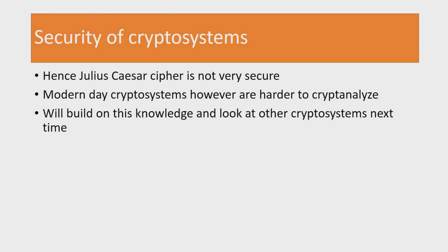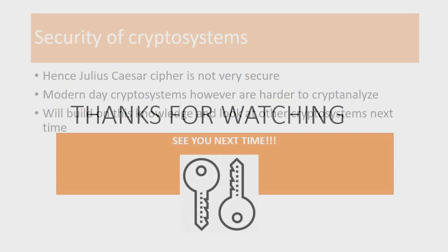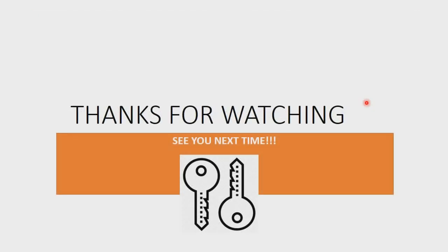In the modern day, we have different types of cryptosystems which are harder to cryptanalyze, and we'll look at some other modern day cryptosystems in the next video. That's the end of this video — we've looked at the Julius Caesar cipher and how we can encode elements in mod 26. Thanks for watching, like if you liked the video, subscribe if you'd like to, and I'll see you next time.